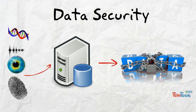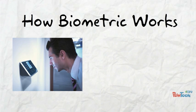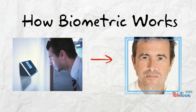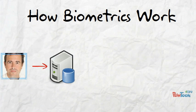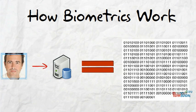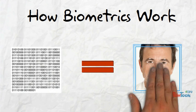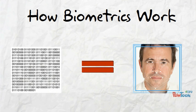Here's how biometric verification works on the backend. To convert the biometric input, a software application is used to identify specific points of data as match points. The match points in the database are processed using an algorithm that translates that information to a numeric value. The database value is compared with the biometric input the end user has entered into the scanner, and the authentication is either approved or denied.